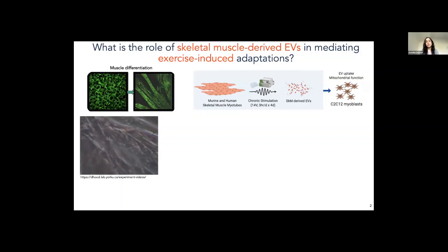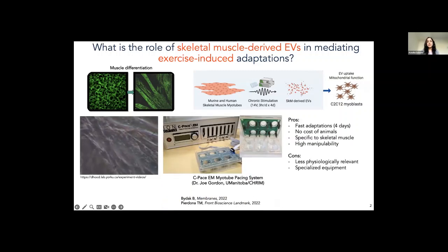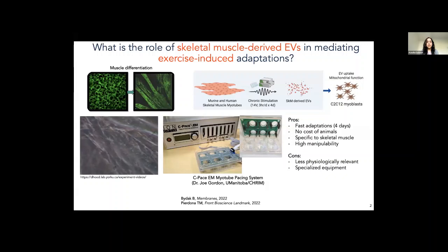To answer this, we used an in vitro model where we took C2C12 myoblasts, differentiated them into myotubes, and electrically stimulated them for four days. This video shows what the myotubes look like when they're contracting. Afterwards, we isolated EVs from the cell culture media. This was done in collaboration with Dr. Joe Gordon at the Children's Hospital at U Manitoba. The advantage of this model is you'd see adaptations in four days that you would normally see in weeks and months in mouse or human models, and we can drill down on skeletal muscle-specific EVs with much more ease than in vivo.